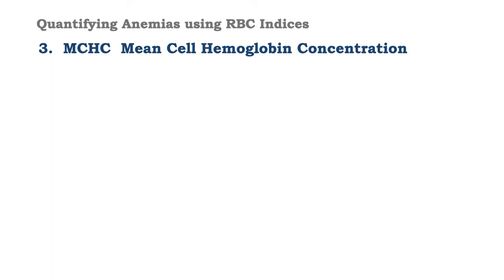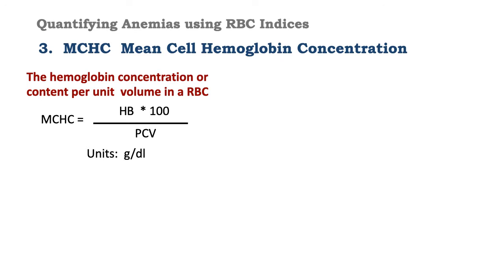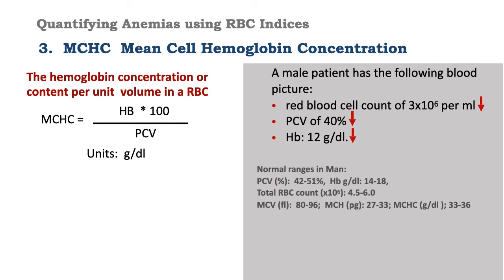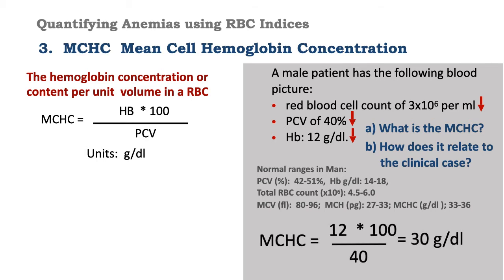The third and last index is MCHC, or mean cell hemoglobin concentration. This is the hemoglobin concentration per unit volume in a red blood cell. It is calculated by using the concentration of hemoglobin times 100, divided by the packed cell volume. The units of measurement are grams per deciliter. When we calculate it using our results — hemoglobin concentration 12 times 100, divided by the PCV of 40 — we get 30 grams per deciliter.